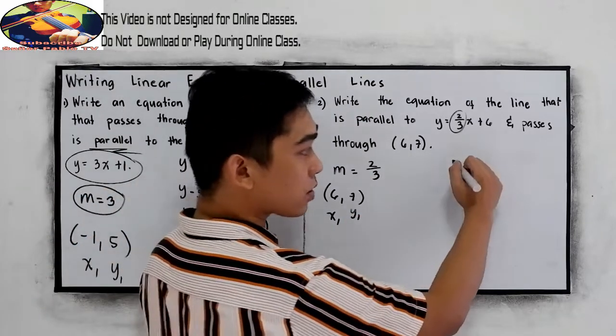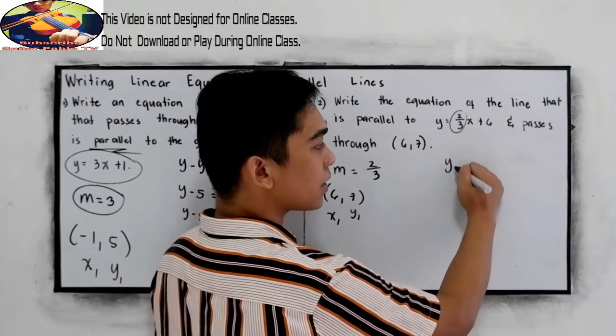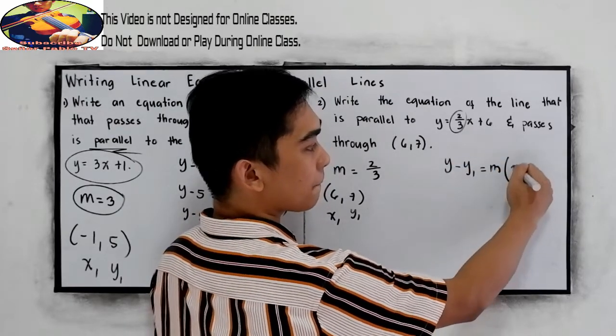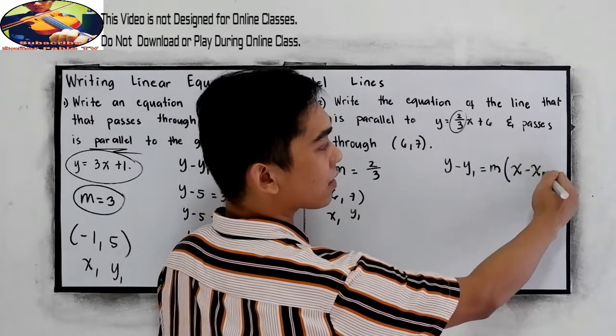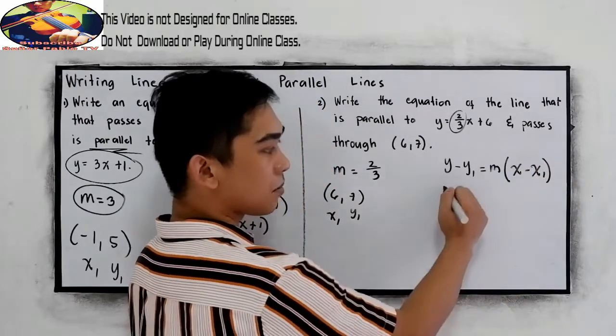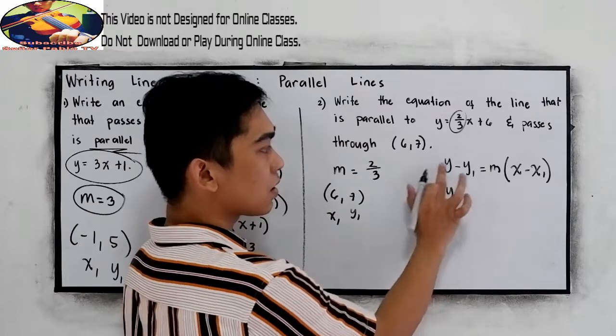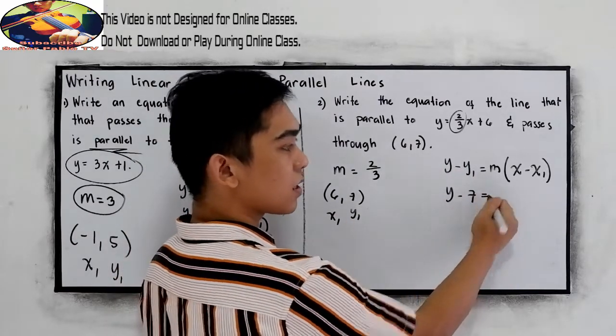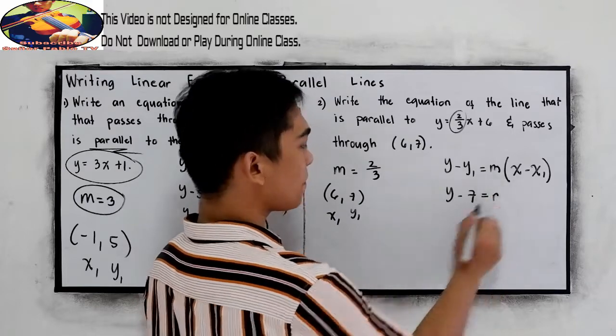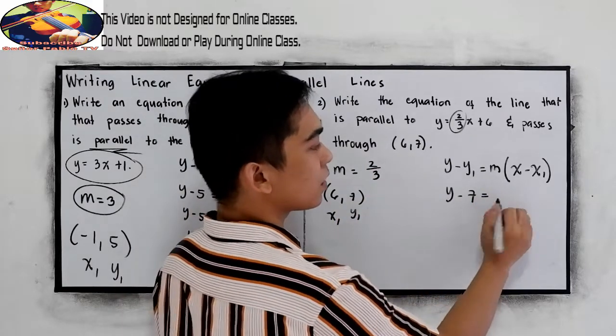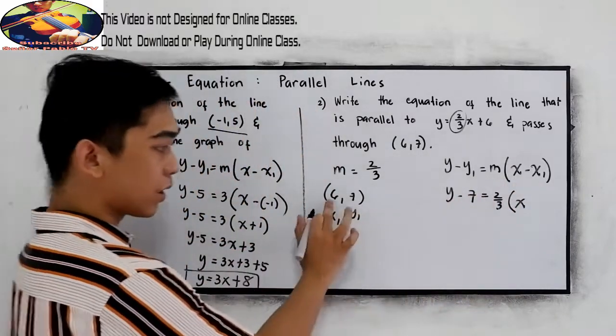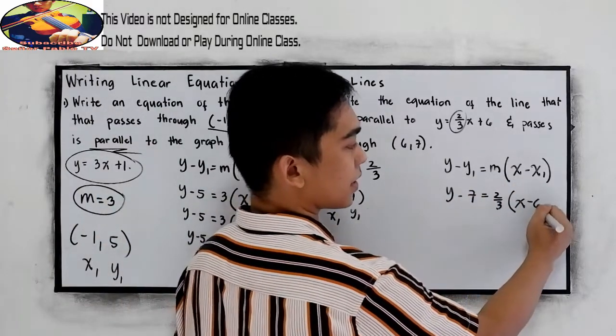Then write our point-slope form: y minus y sub 1 is equal to m times x minus x sub 1. y minus 7 is equal to m, our m is 2 over 3, times x. Our x sub 1 is 6.